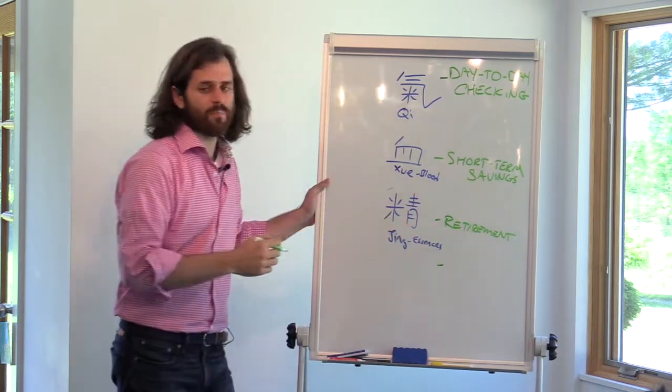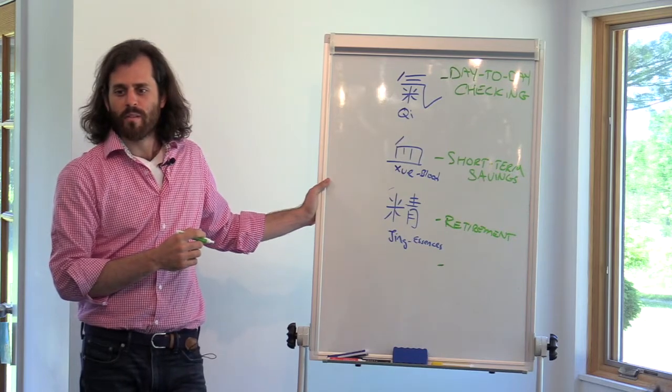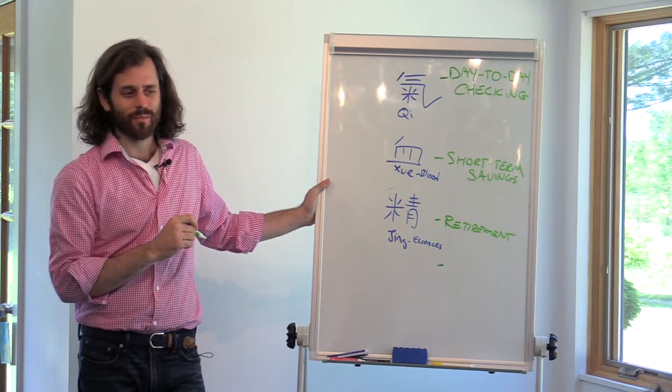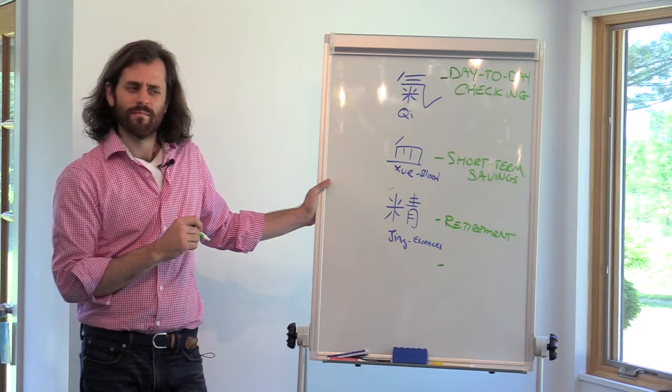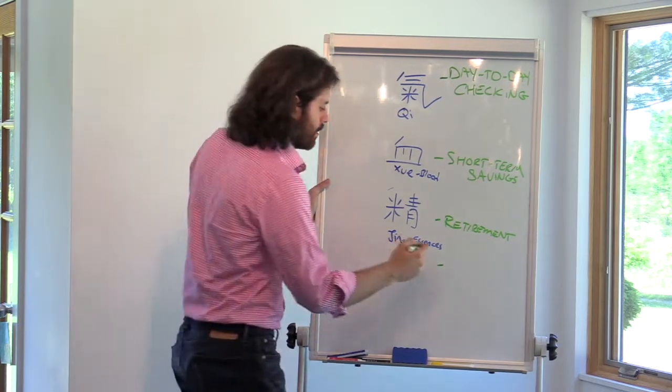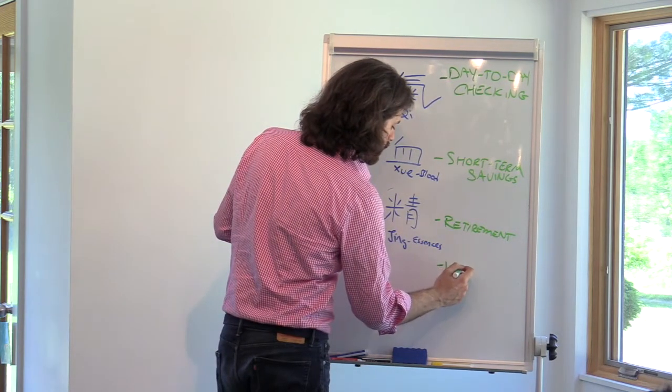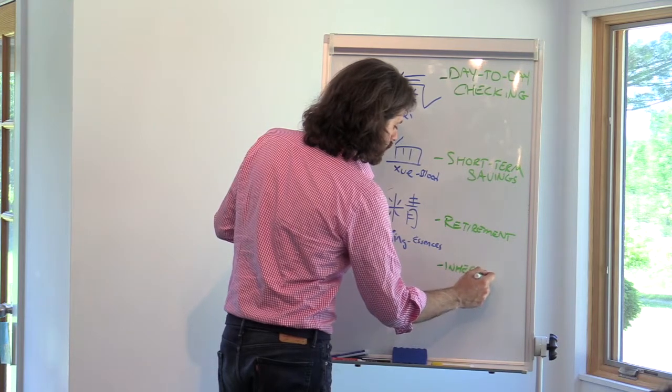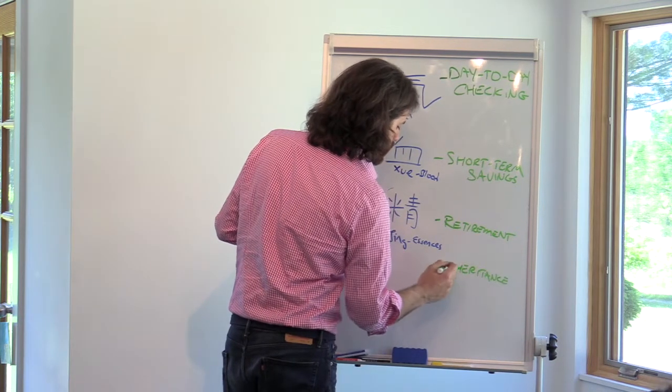And then what's a deep level of savings that you have access to that someone has to give you? A bond? A trust. A trust or an inheritance. Okay.